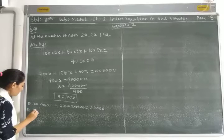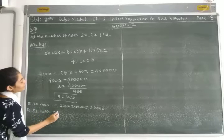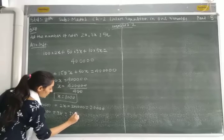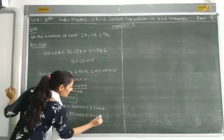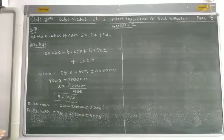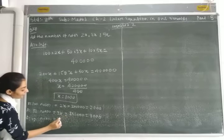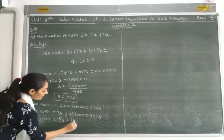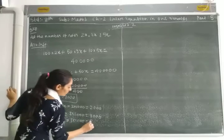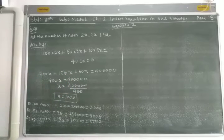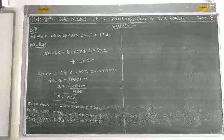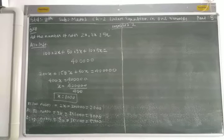The 50-rupee notes are 3x, so 3 into 1000 equals 3000. The 10-rupee notes are 5x, so 5 into 1000 equals 5000. So we found the total number of notes of each denomination: 100-rupee notes are 2000, 50-rupee notes are 3000, and 10-rupee notes are 5000.